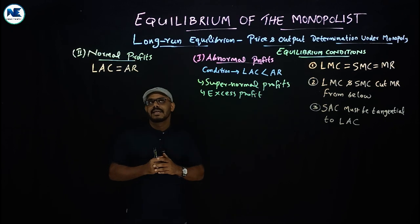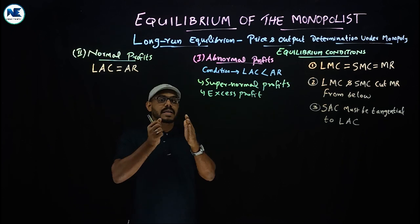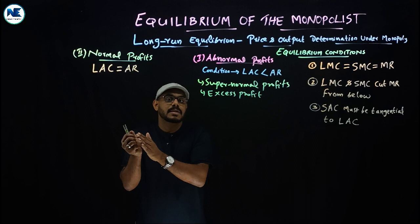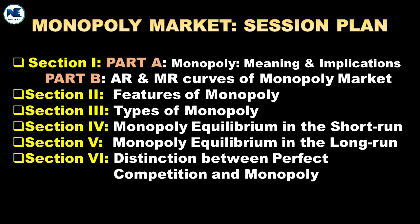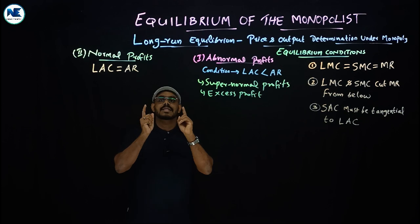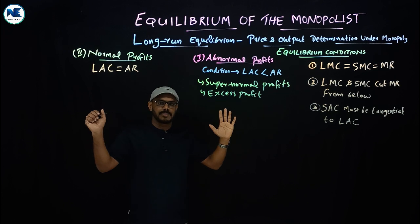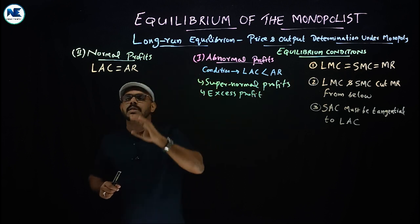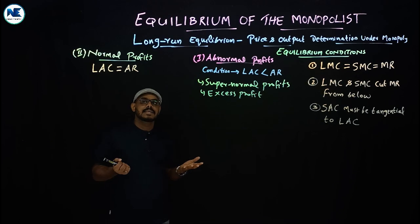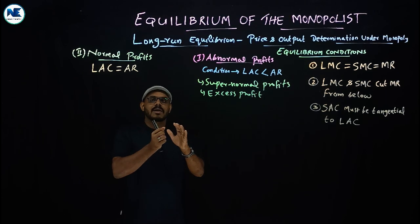In the long run, unlike the short run, there are only two possibilities: abnormal profits or normal profits. This is a major difference between monopoly and perfect competition. In perfect competition, the long-run equilibrium allows only normal profits, but under monopoly in the long run, the firm can earn both normal profits and abnormal profits due to high demand.